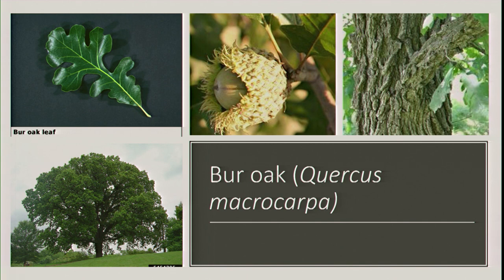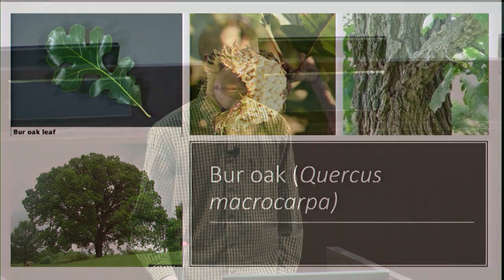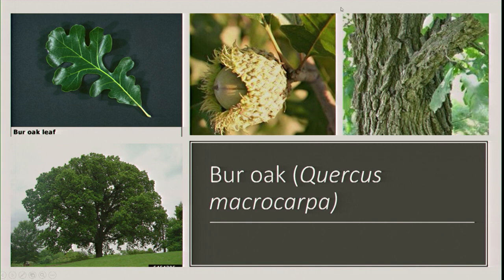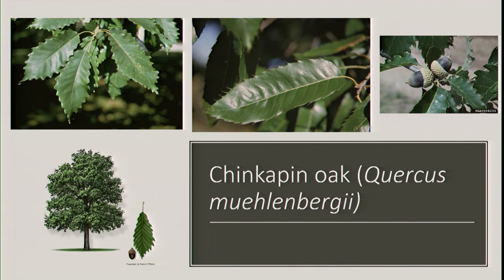Bur oak is a white oak — Quercus macrocarpa. I remember the scientific name because 'macro' means large, and it has a very large fan-shaped leaf. The acorns are easy to identify: they're really big with a large husk. Be mindful of where you plant a bur oak — the acorns are very large. At the Dallas Arboretum, there's a parking lot mostly planted with bur oaks and there are a lot of dents in those cars from the falling acorns. Bur oaks also have a wide canopy, get fairly large, and have corky, very furrowed bark.